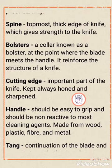Next one is the cutting edge. The cutting edge is the most important part of the knife, which should always be sharpened and honed. You have to keep it very sharp because the finishing of your dishes will not be clean if your knife is not properly sharpened or honed.